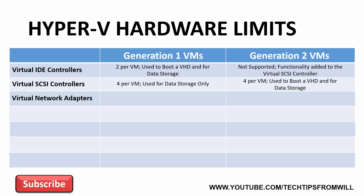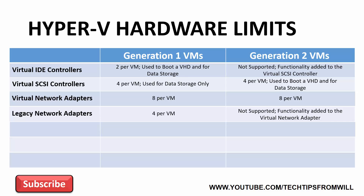Next up we have the number of virtual network adapters. Both Generation 1 and Generation 2 virtual machines can support up to eight network adapters, which can be added and removed as desired. Virtual network adapters should not be confused with the legacy network adapter. Legacy network adapters are only supported by Generation 1 virtual machines, of which up to four can be added. Generation 2 virtual machines do not support legacy network adapters at all, because that functionality has been incorporated into the virtual network adapter for Generation 2 virtual machines.